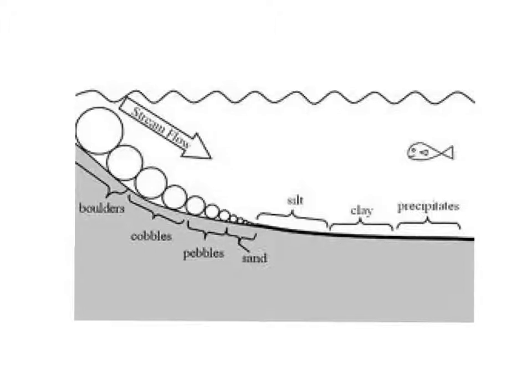So obviously the first thing that will happen is that the river would say I can no longer carry the gravel because the gravel is the biggest, so I'm going to drop the gravel out first and then I'm going to continue to carry the other stuff on further. Then it's going to get to a point where it can't carry the sand anymore, so it's going to start to drop the sand out.